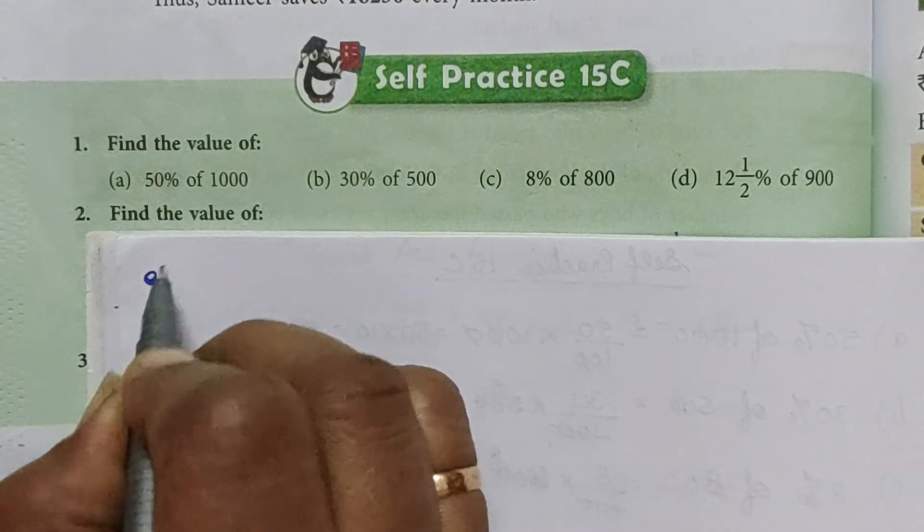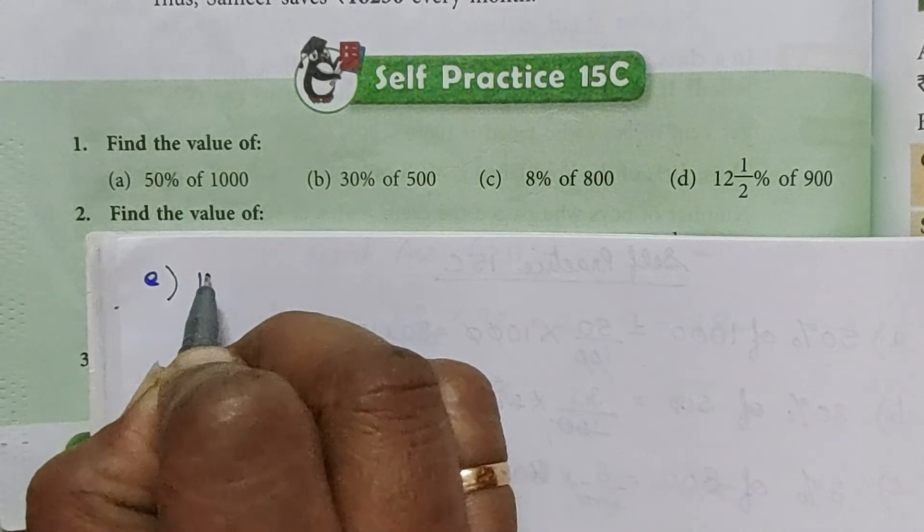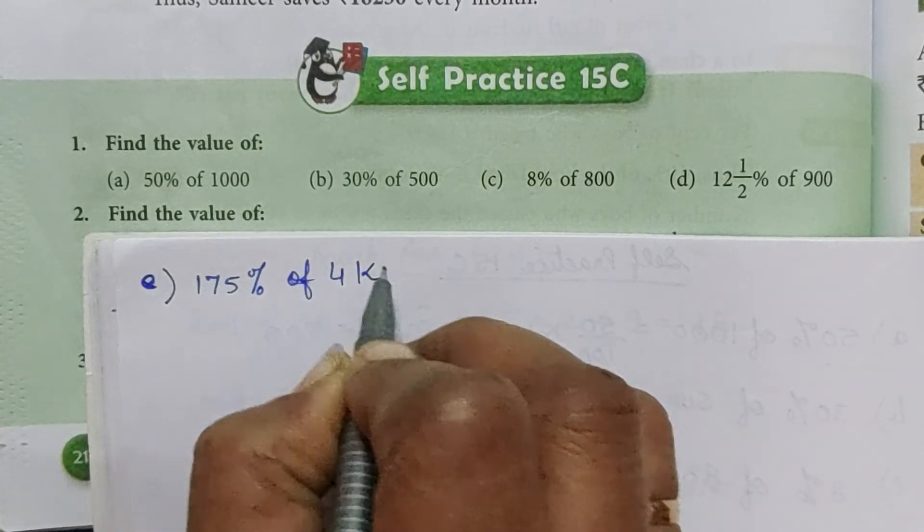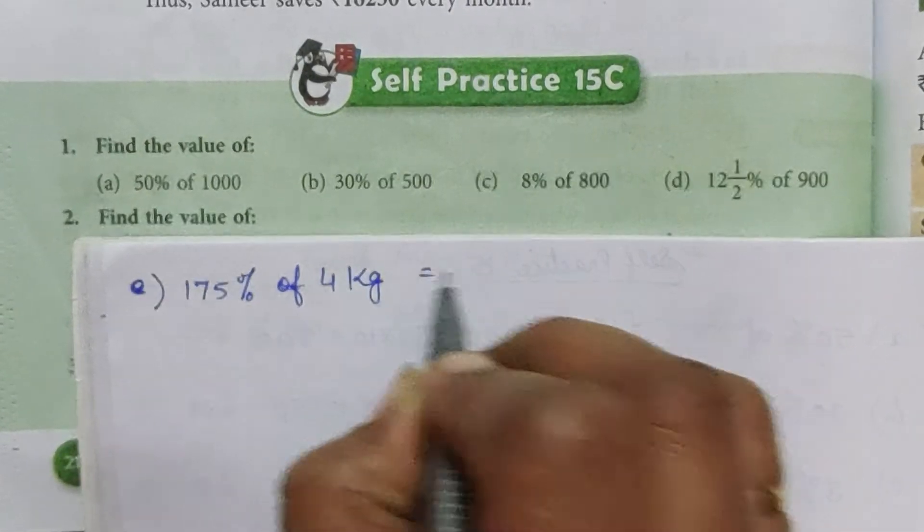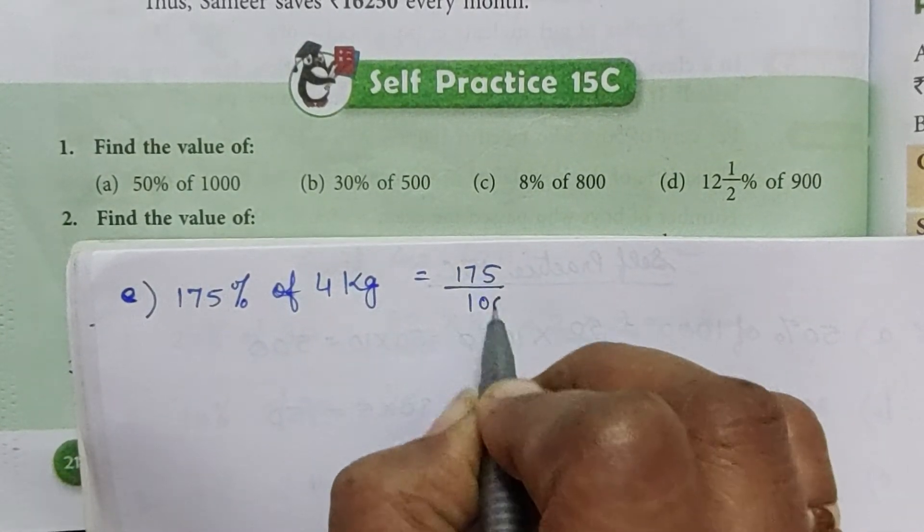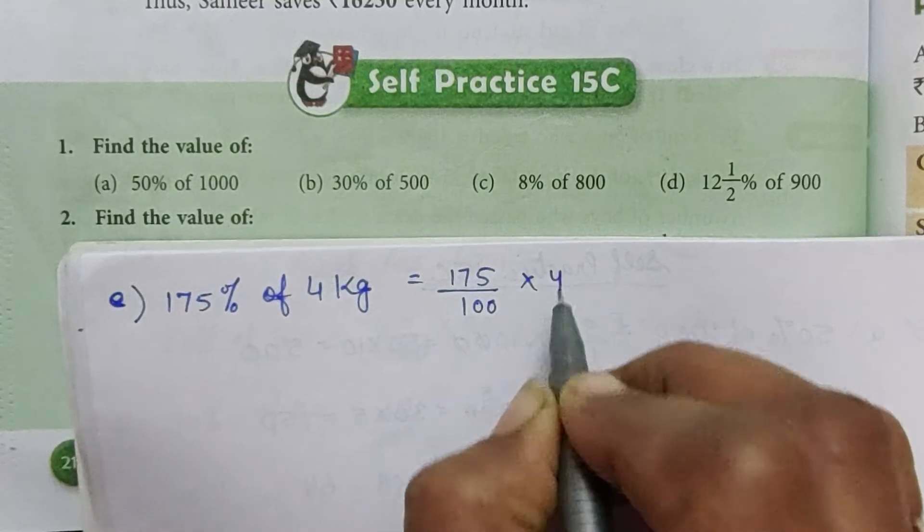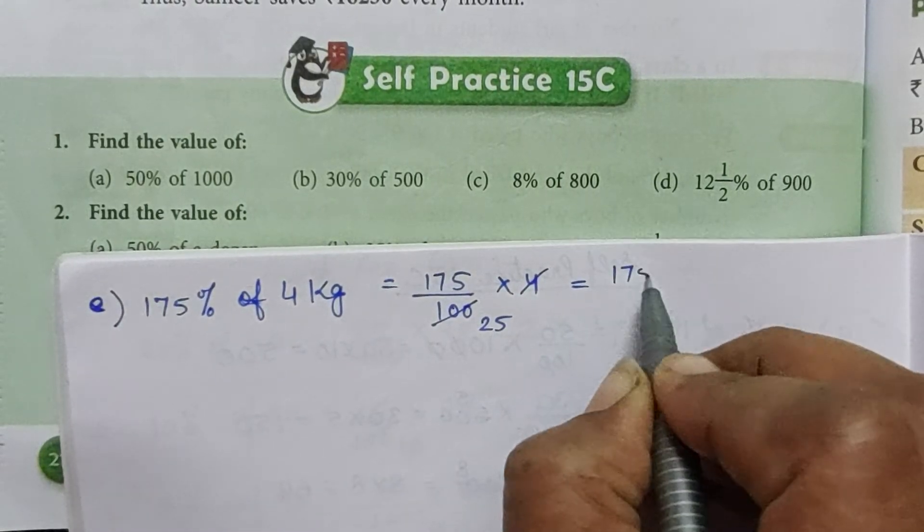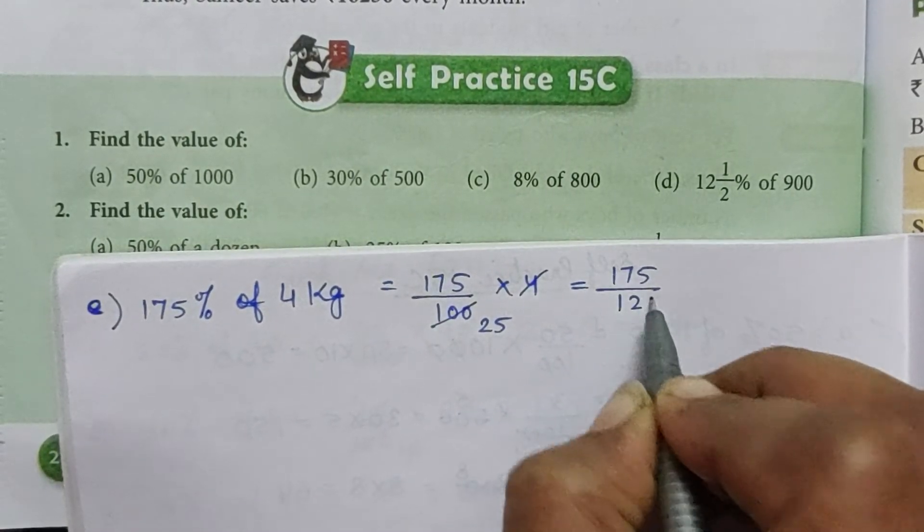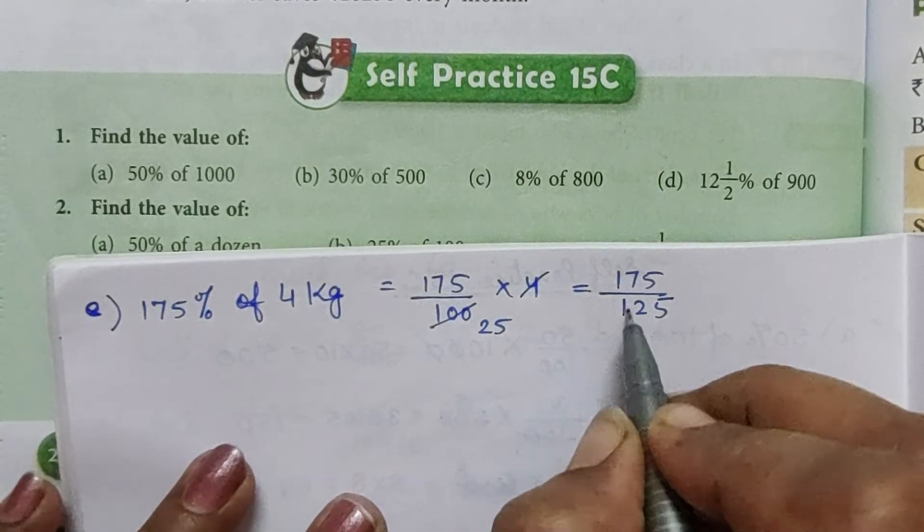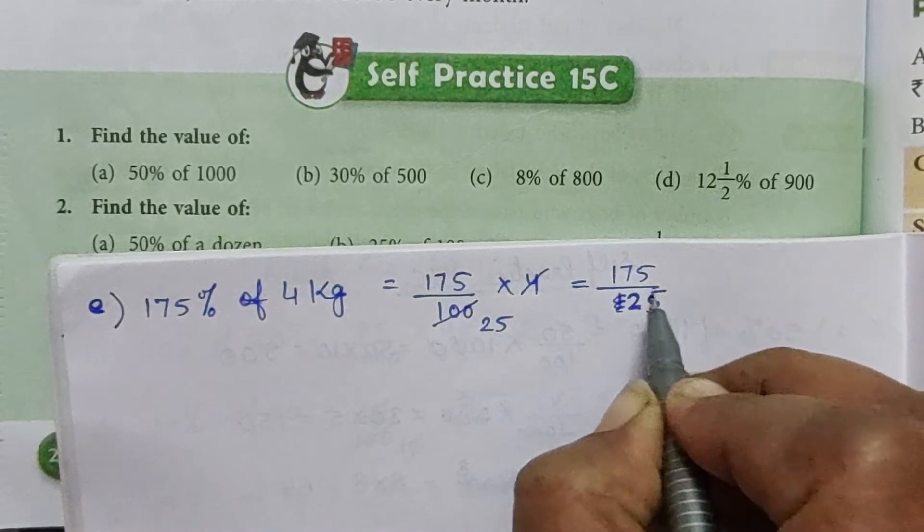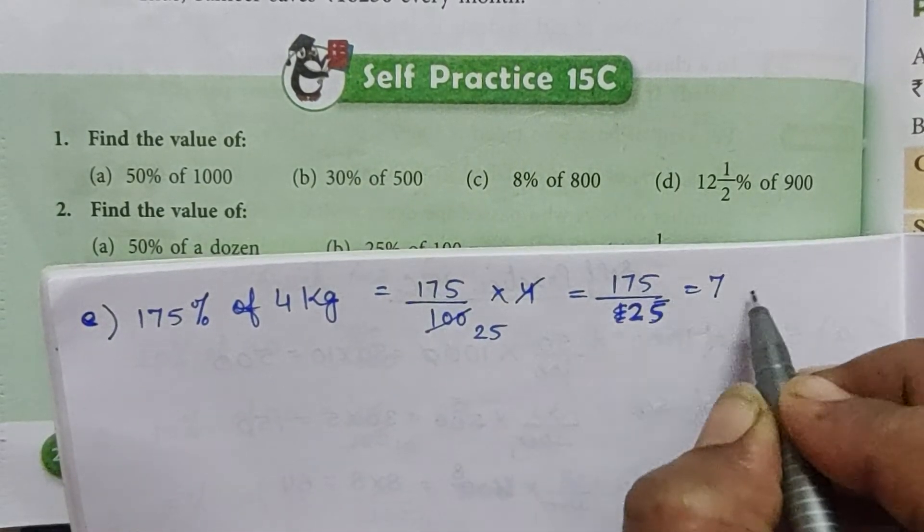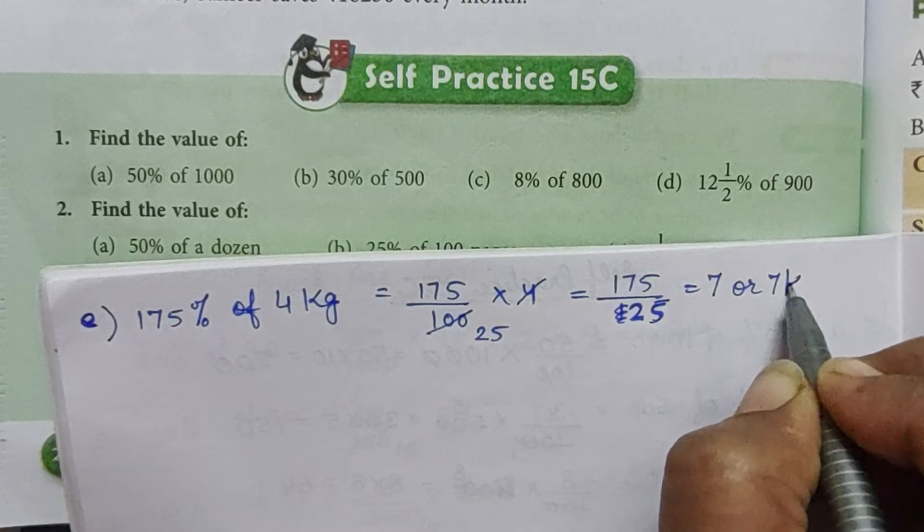Part e: 175% of 4 kg equals 175 by 100 into 4. To solve this, 4 times 25 is 100, so 175 by 25. Dividing 175 by 25 gives us 7, or we can say 7 kg.